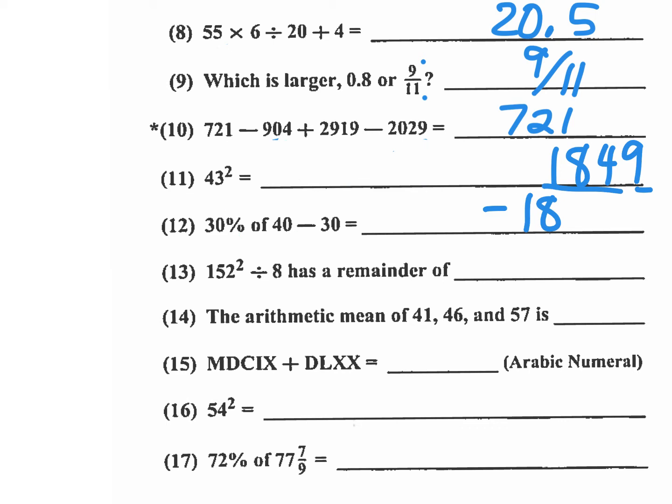Number 13 is a remainder problem. 152 squared divided by 8 has a remainder of what? Well, there's no way you're going to square 152 and try to figure out the remainder. There's got to be a little shortcut here. What is the remainder when you take 152 divided by 8? Well, the remainder is 0. And then 0 squared is 0. So the answer is 0. Now, how do you know that 152 divided by 8 has a remainder of 0? Well, what I'll do is I'll add 8 to 152 and I get 160, which is a multiple of 8. So 160 divided by 8 has a remainder of 0. 152, which is 160 minus 8 also has a remainder of 0. And then 0 squared equals 0. So that's a neat little shortcut there.